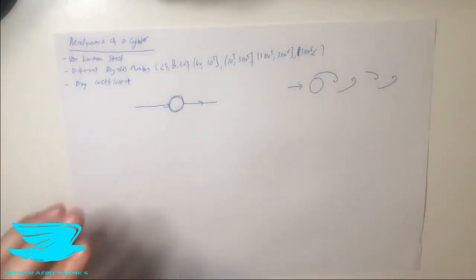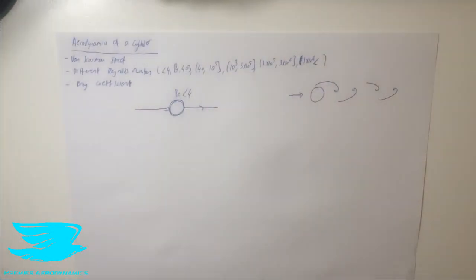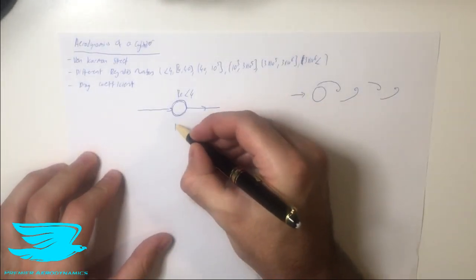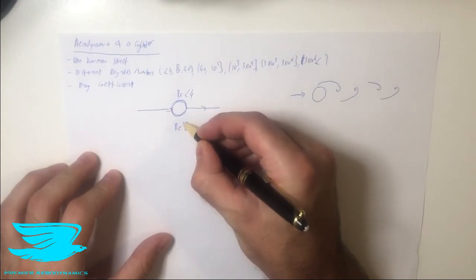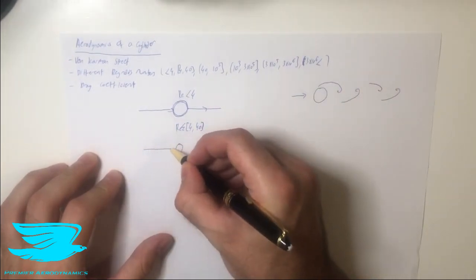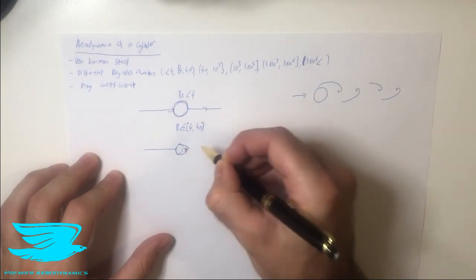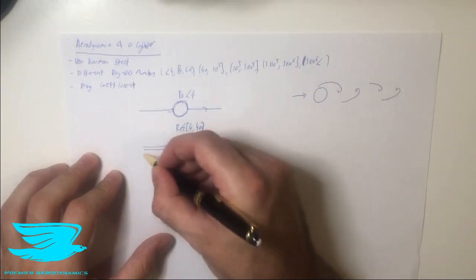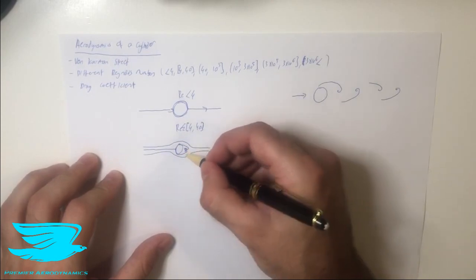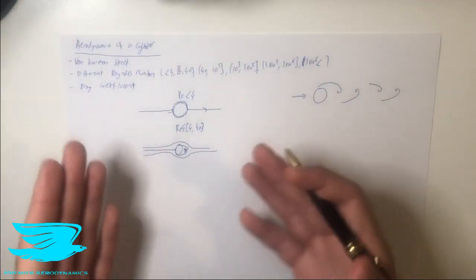If we increase the Reynolds number — if you don't know what the Reynolds number is, check out our video on it. So if the Reynolds number is now between four and forty, the flow physics start to change a little bit. It starts to separate, and we get one vortex forming on one side and another on the other side. The funny thing is it actually stands off the cylinder and just stays there — this is how it looks whether you come back five seconds, five minutes, or an hour later.